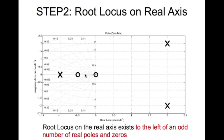The next segment is to the left of one real zero — one is odd, so there is root locus there. The segment between the two zeros is to the left of two real zeros — two is even, so no root locus. Finally, the leftmost segment starting from the leftmost real pole going to minus infinity is to the left of two zeros and one pole, totaling three real poles and zeros — three is odd, so there is root locus there. That gives us the complete real-axis root locus: segments one, two, and three.